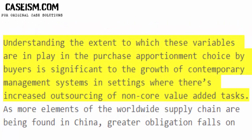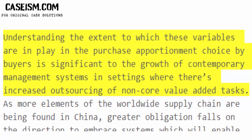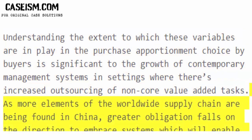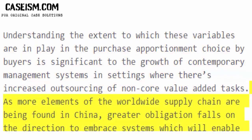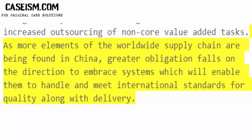Understanding the extent to which these variables are in play in the purchase apportionment choice by buyers is significant to the growth of contemporary management systems in settings where there is increased outsourcing of non-core value-added tasks. As more elements of the worldwide supply chain are being found in China, greater obligation falls on the direction to embrace systems which will enable them to handle and meet international standards for quality along with delivery.